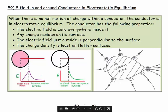When they stop moving, because all the forces on them are balanced, then we're in electrostatic equilibrium. The conductor has the following properties under those circumstances: the electric field is zero everywhere inside it, because it is a shell of charge. If all the charges are on the outside, then it's a shell of charge, and we worked out before that there was no electric field inside. Any charge resides on its surface.